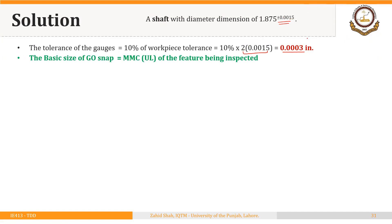The basic size of the go gauge is equal to the MMC of the feature being inspected. The feature being inspected here is an external feature — the diameter of a shaft. So the basic size of the go snap gauge will be equal to the upper limit of the diameter, which is the MMC. That will be 1.875 plus 0.0015, so the basic size of the go snap gauge turns out to be 1.8765 inches.